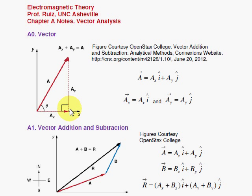And A sub y times j-hat gives you the vector A sub y, which points up this one here. So when we add the vectors, we simply put the tail on the tip of the previous one, and then we draw a line from the tail of the first one to the end here, the tip of the second one.